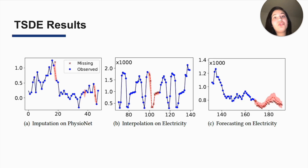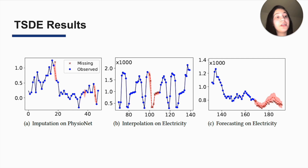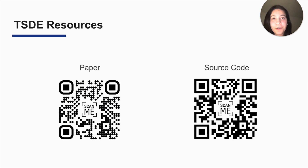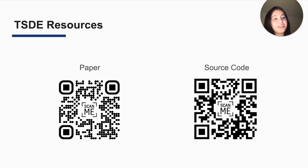These graphs show how well TSDE performs predictions in terms of imputation, interpolation, and forecasting, and we can see that it predicts very well the missing values which are marked by red crosses here. More details can be found in our paper and repository, so make sure to read our full paper, explore our source code, and prepare any questions you might have. Please join our discussion at KDD and you are welcome to share your thoughts with us.